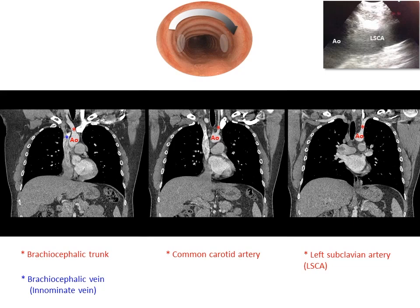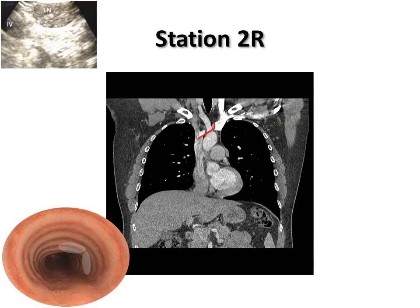In the CT image, the brachiocephalic vein is seen branching off the superior vena cava. Station 2R extends to the left lateral wall of the trachea. The upper border is the apex of the right lung in pleural space, and the lower border is the intersection of the caudal margin of the innominate vein with the trachea.